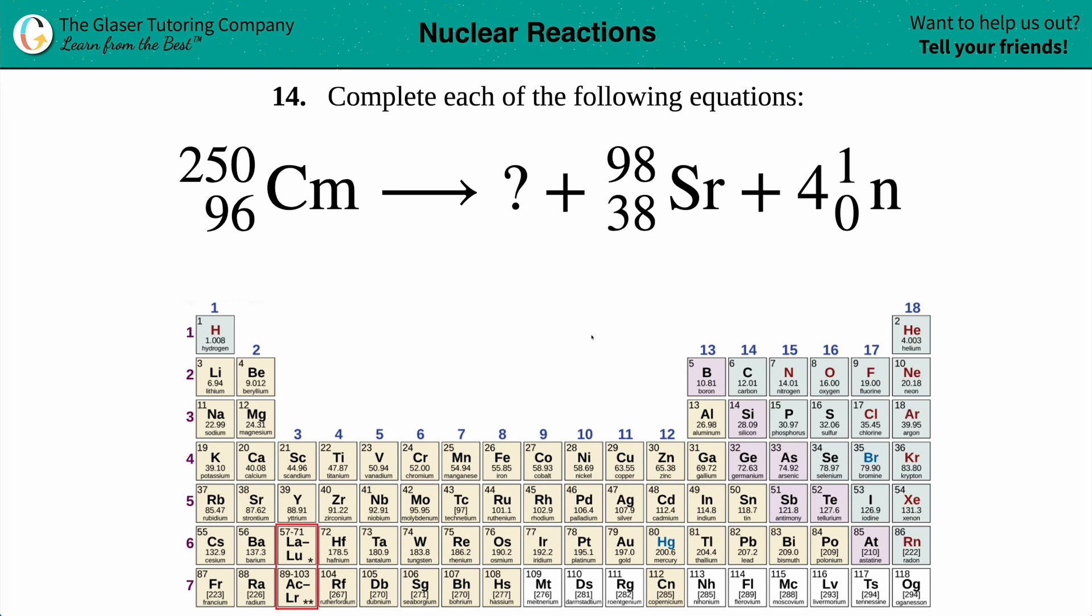Number 14: Complete each of the following equations. We have this nuclear reaction with Cm - I have no idea what element that is, but we're just going to keep rolling through. It's got an atomic mass of 250 with an atomic number of 96.